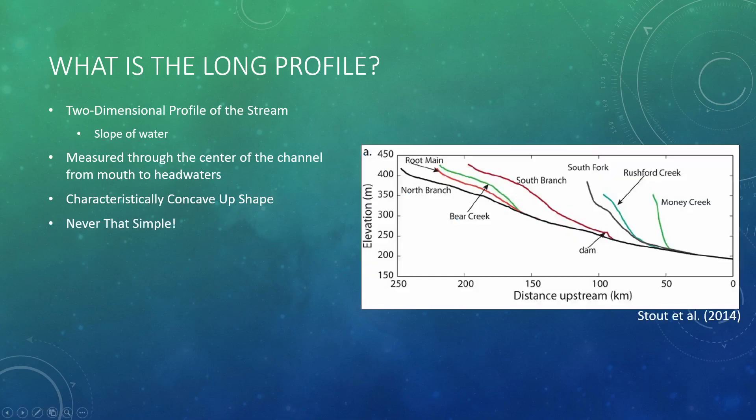However, natural systems are rarely ideal. Here we can see a long profile of the Root River in southeastern Minnesota in the United States. We can see a few things. First, we see multiple lines rather than a single one as in the example. These other lines represent tributary streams that flow into the Root River. They all have their own unique longitudinal profiles that don't necessarily reflect the main stem.